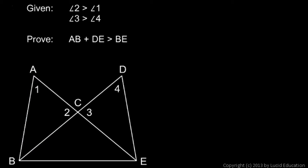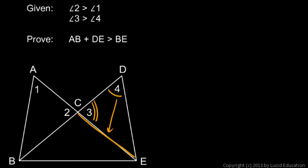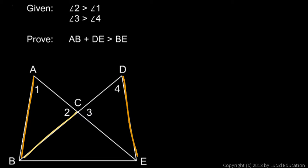Similar reasoning applies over on the right side. If angle 3 is bigger than angle 4, then the side opposite angle 3, DE over here, must be bigger than the side opposite angle 4, CE. So that means DE is bigger than CE.